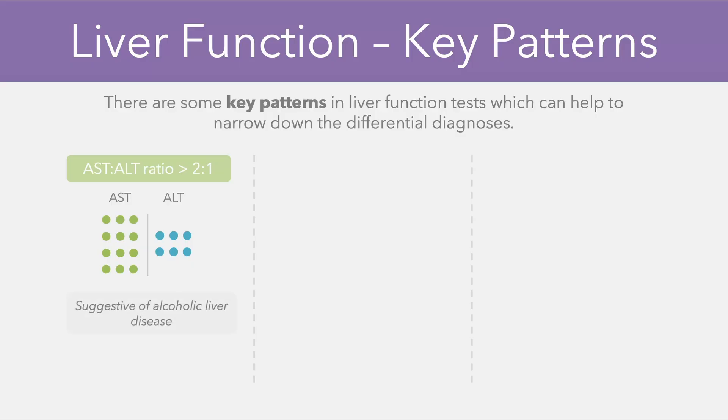The reason why this occurs is because alcohol depletes vitamin B6, and this is a vitamin which is required for ALT synthesis. Therefore, when there's some form of liver damage, although both of the enzymes might go up, it's likely that the ALT will not increase as much due to this synthetic effect.